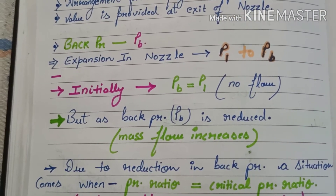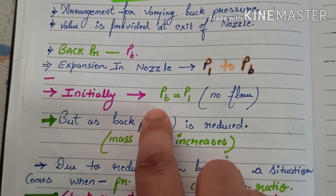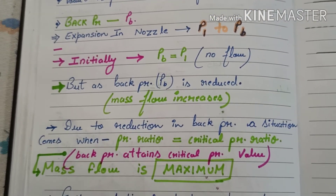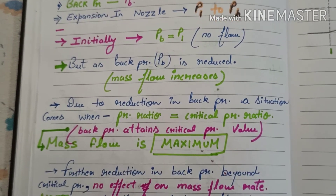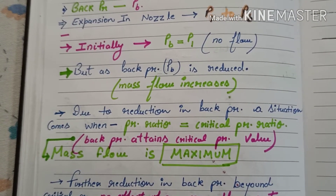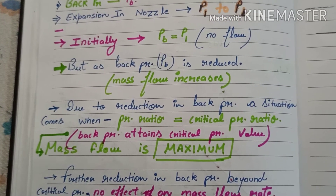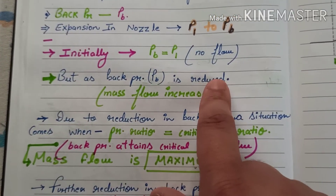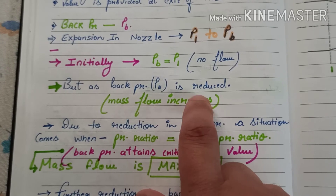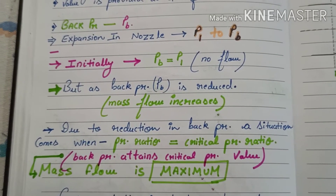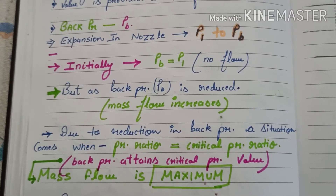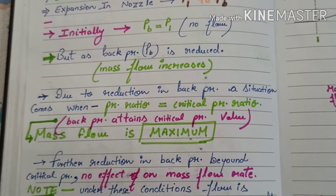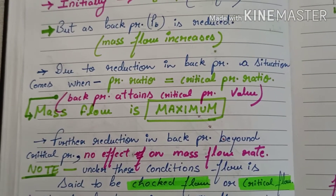Initially pb is equal to p1, which means there will be no flow. When there is no flow, p1 will be equal to pb. But as the back pressure is reduced, mass flow rate increases — when the back pressure is slightly reduced, the flow through the nozzle increases.